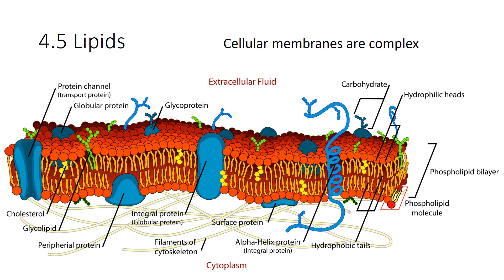Cellular membranes are very complex. If you were to take a cellular membrane and separate it out by the phospholipids and the proteins, by weight, a cellular membrane is 50% proteins.